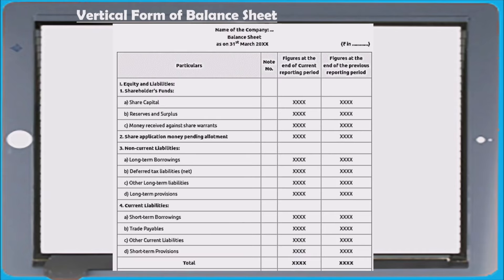Moving to the 20-mark area: financial statements of a company and analysis of financial statements. Always remember the headings. A 3-mark sure question will come on different headings. Shareholders' fund is one heading, non-current liability is another, current liability is another, and many items are coming. Shareholders' fund includes sub-headings like share capital, reserves and surplus, money received against share warrants. Non-current liability includes sub-headings like long-term borrowings, deferred tax liability, other long-term liabilities, long-term provisions.